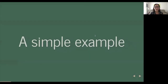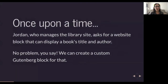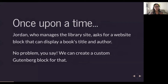Let's start with a very simple example. Once upon a time, Jordan — who manages the library site — came over and asked for a block that can display a book title and the book's author. Very, very simple. No problem, that is a great request. We can create a custom Gutenberg block for that.